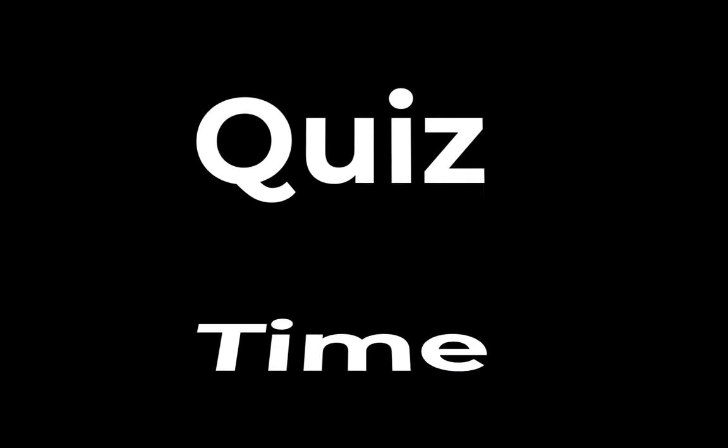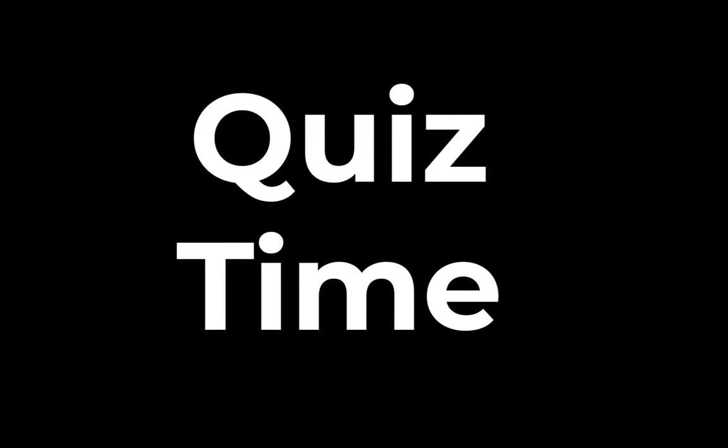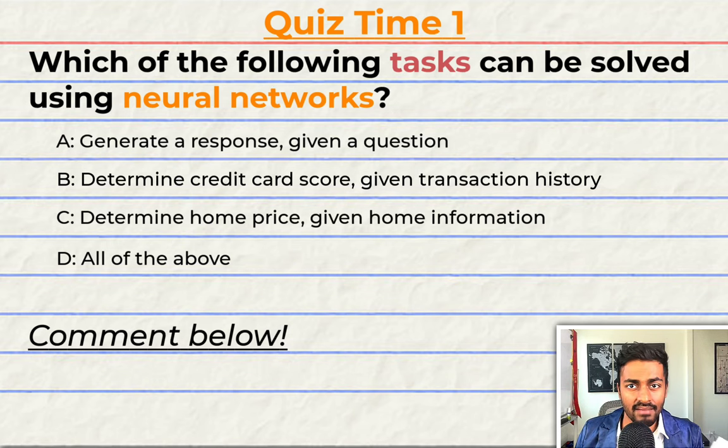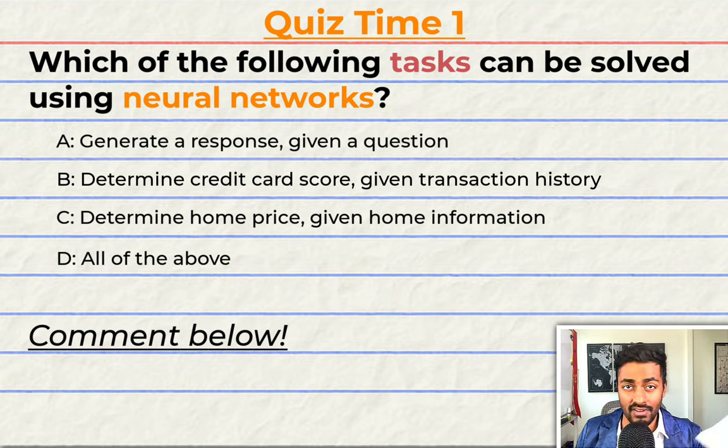Quiz time. Have you been paying attention? Let's quiz you to find out. Which of the following tasks can be solved using neural networks? A. Generate a response given a question. B. Determine a credit card score given a person's transaction history.